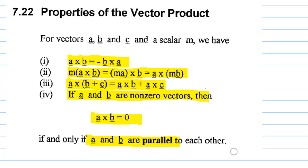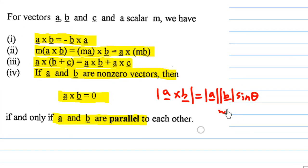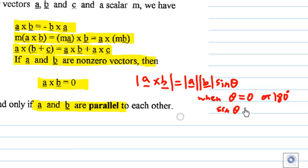Because the magnitude of a cross b is the magnitude of a times the magnitude of b times sine theta, where theta is the angle between a and b. So this is zero means theta equals zero or 180 degrees. Then sine theta will be zero.